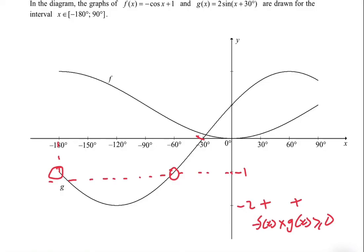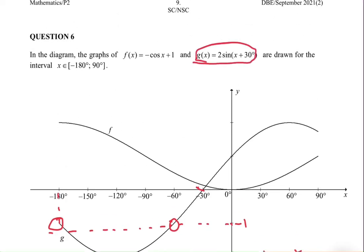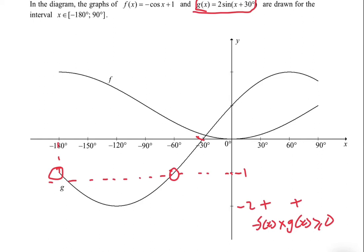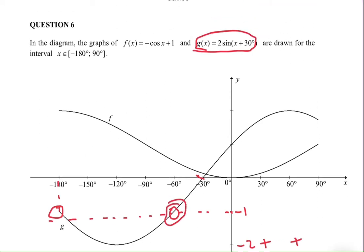What I'm doing here just gives us an idea of where the point we're looking at is. So now what you do: you substitute -180° into the equation of g(x) and see if you get -1.